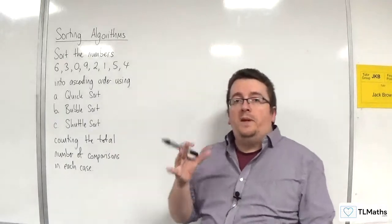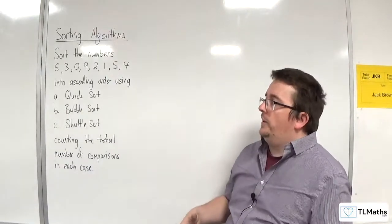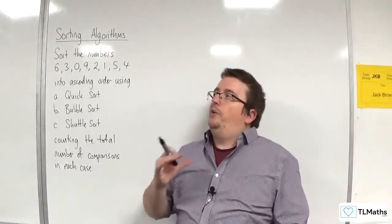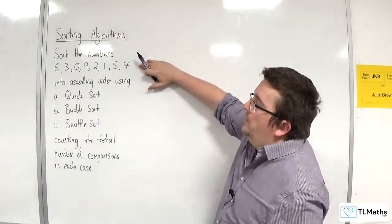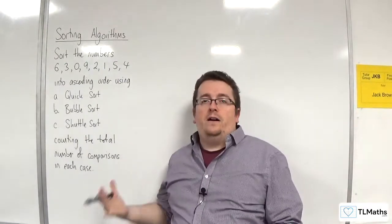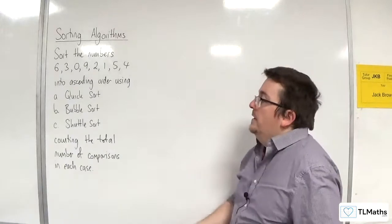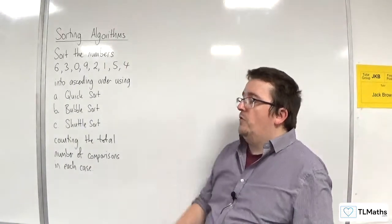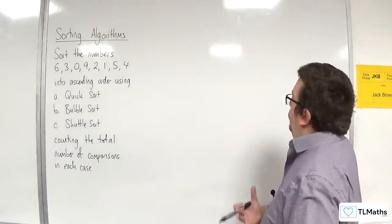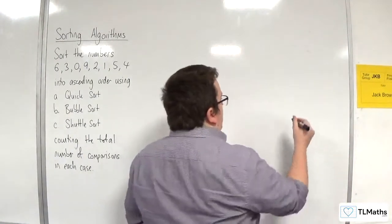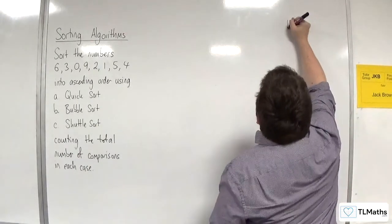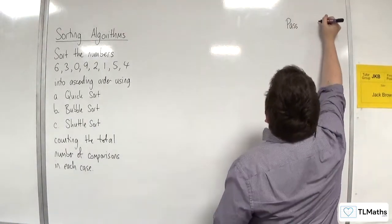In this video, we are going to be comparing the efficiency of the quicksort, bubble sort and shuttle sort algorithms by sorting this list of numbers into ascending order. The way we are going to determine how efficient they are and make that comparison is by counting the total number of comparisons in each case. So I'm going to set up a little table here for paths and comparisons.